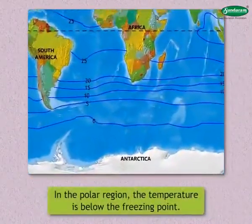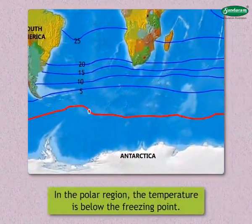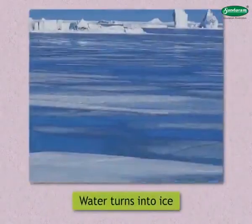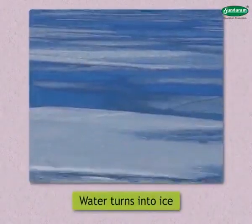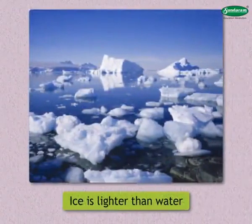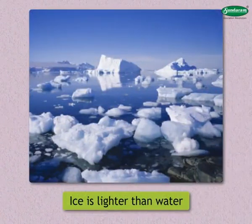In the polar region, the temperature is below the freezing point. As the water turns into ice, and as ice is lighter than water, one finds ice on the ocean surface and water below in the polar areas.